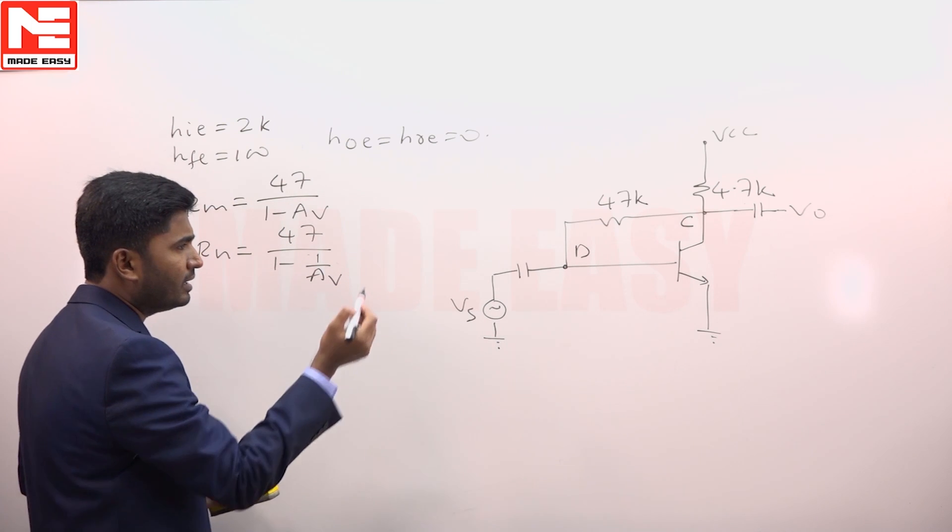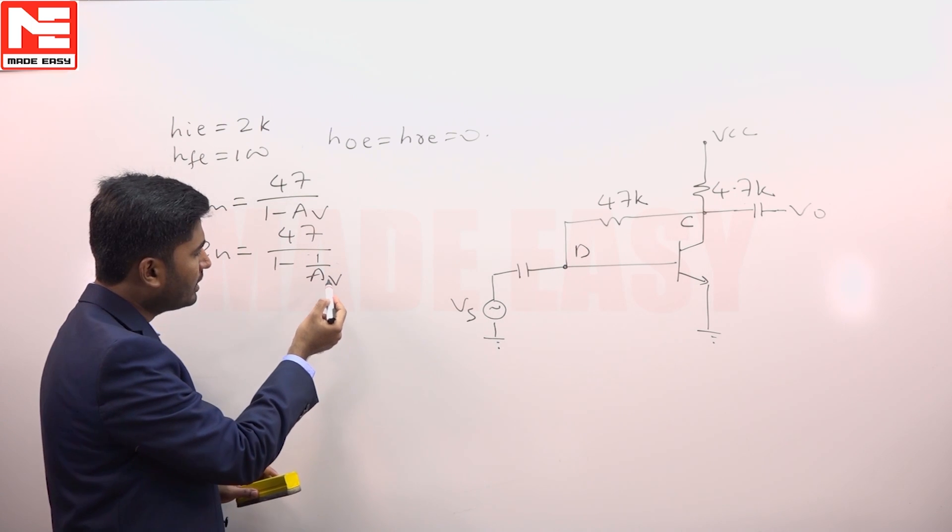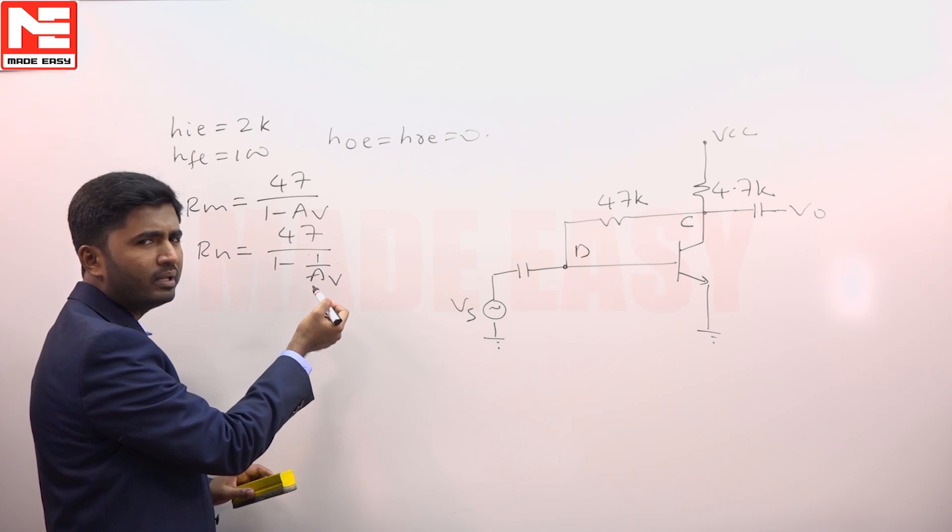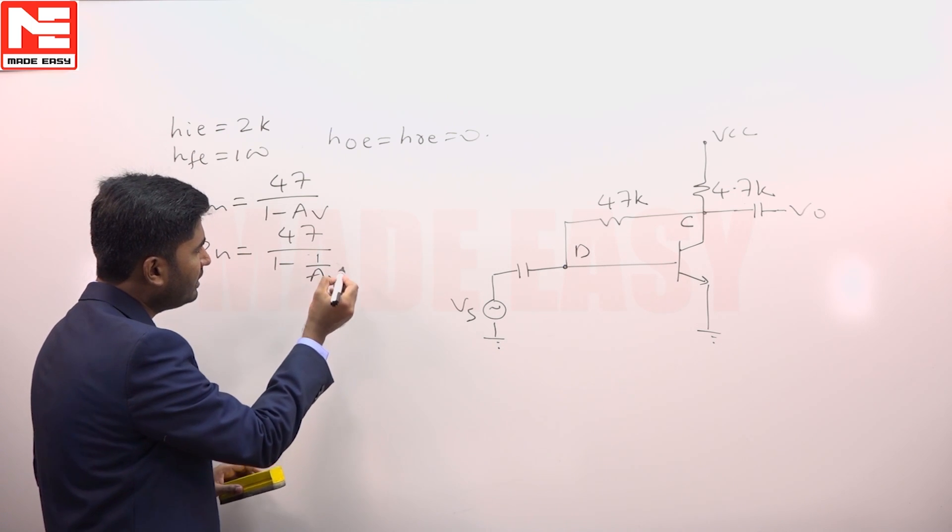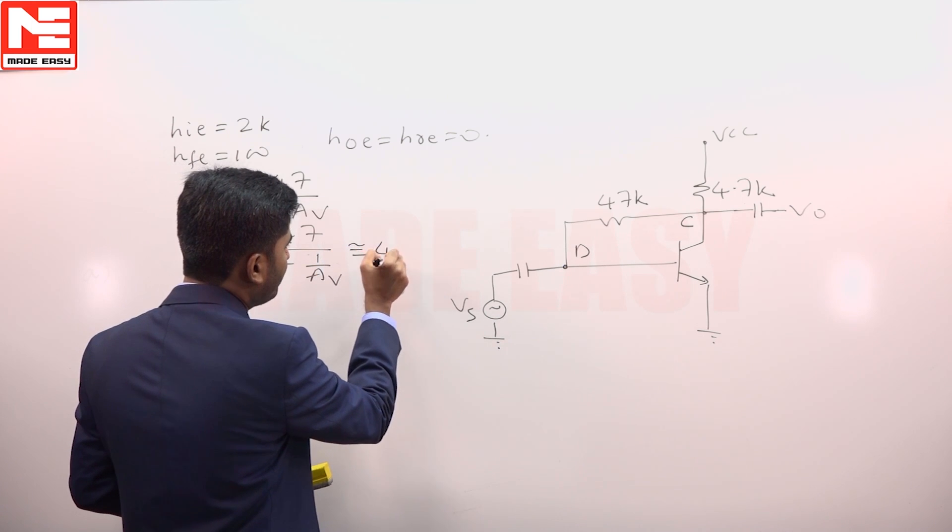Now, this is a common emitter amplifier wherein A v will be quite large. So 1 by A v can be neglected. If you neglect 1 by A v, it becomes approximately 47k.